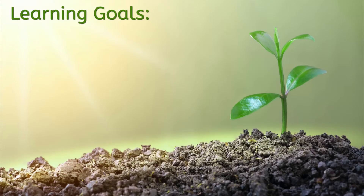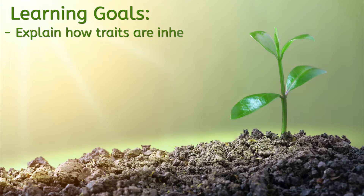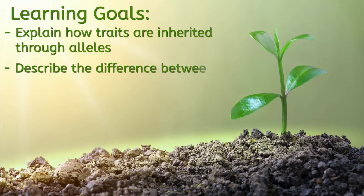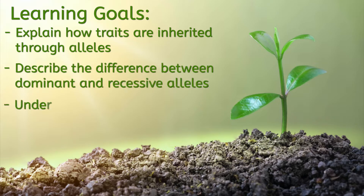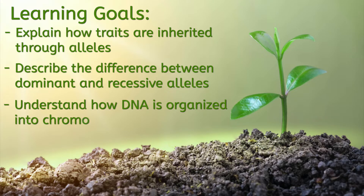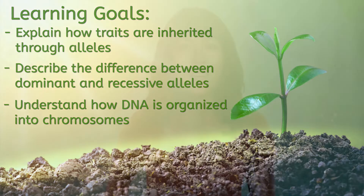We'll look at why that is. After today's lesson, you'll be able to explain how traits are inherited through alleles, describe the difference between dominant and recessive alleles, and understand how DNA is organized into chromosomes. That means today we are focusing on the third theme of biology: reproduction and inheritance, which includes genetics — the study of how traits are passed from parents to offspring.